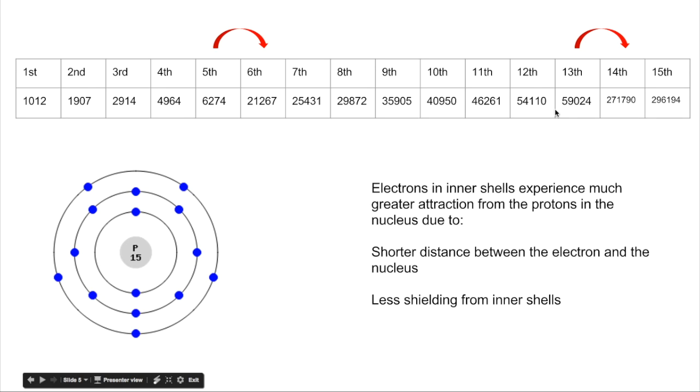And then this huge increase in energy because we're breaking into the innermost shell, really close to the nucleus. No shielding at all now because that's the inner shell, and so a tremendous amount of energy needed to get the electrons out.